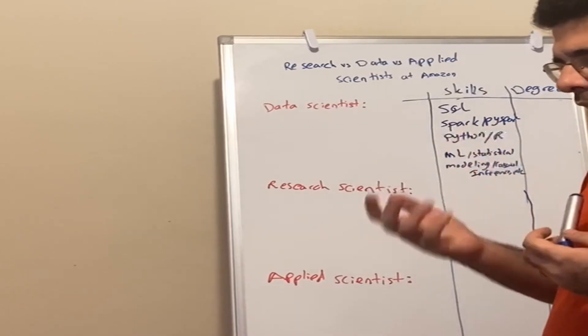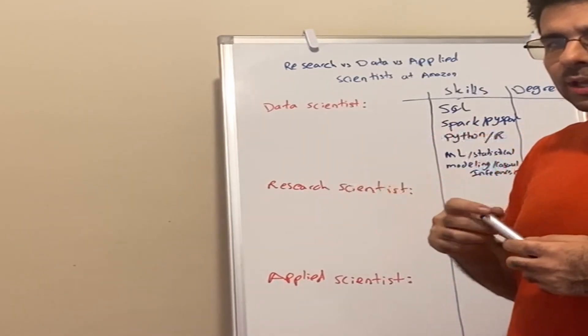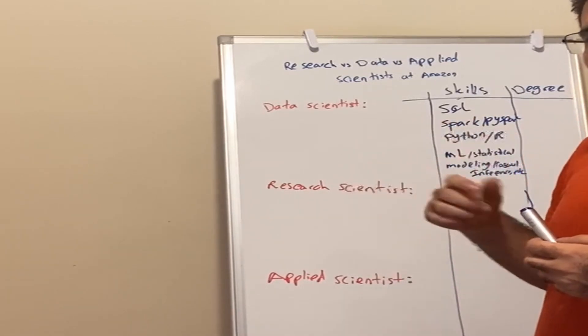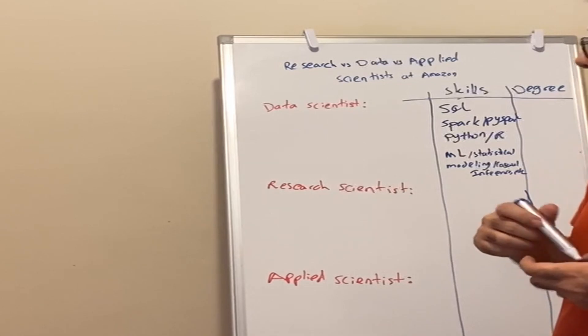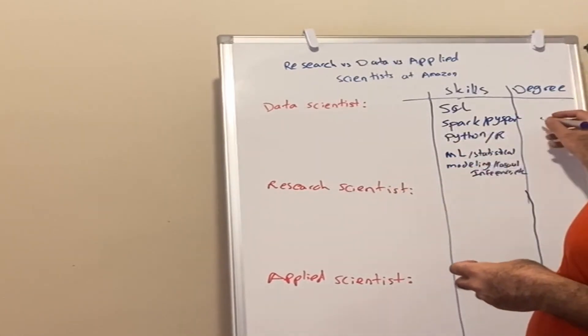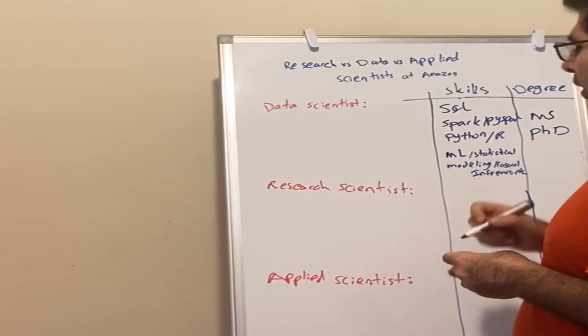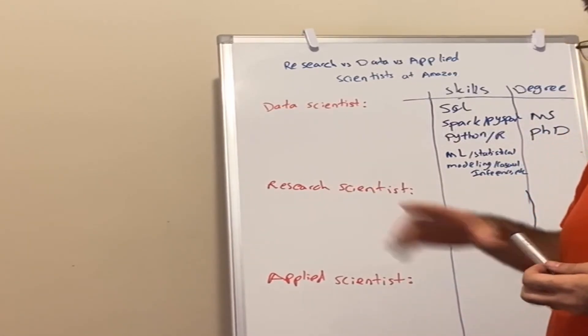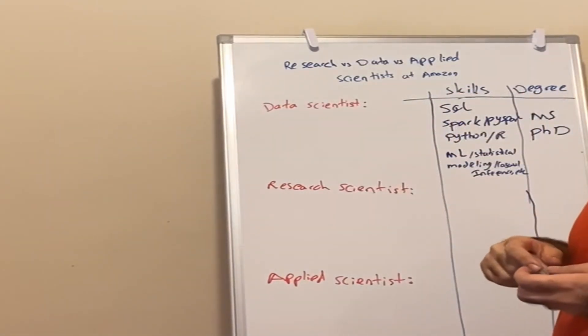So there are some other skills like ability to communicate, being independent, being a team player. We're not going to talk about that. Those are more like soft skills. Now, degree. Data scientists are mainly MS or PhD. I've seen them both a lot. Master is totally fine for data scientists at Amazon. PhD also is totally fine.